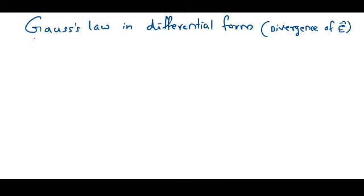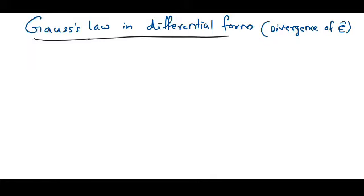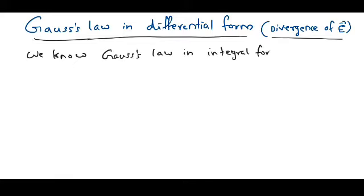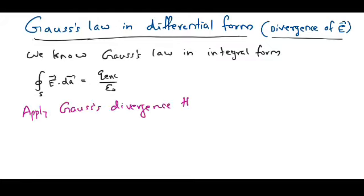In the last class we discussed Gauss's law and its integral form. In today's class we start our discussion on Gauss's law in differential form, that is the divergence of the electric field. We already learned Gauss's law in the integral form: the surface integral ∮E·da is equal to total charge enclosed by the Gaussian surface divided by epsilon zero. Now I will apply Gauss's divergence theorem to the left-hand side of this equation.